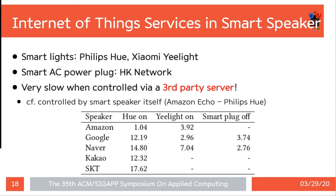In IoT, the situation is even worse. There is a big difference depending on whether the smart speaker uses a direct local control API or controls through a third-party server. Amazon Echo used the local control API to control Philips Hue; as a result, it took only one second to control. However, other speakers used the Philips Hue remote control API via cloud. The remote API cloud server includes an additional authentication process, and the distance from the cloud server are the causes of slow operation.